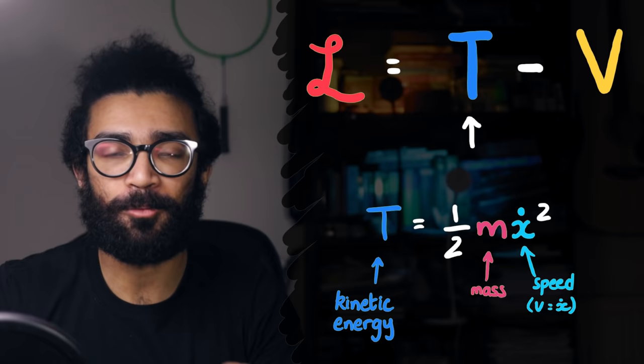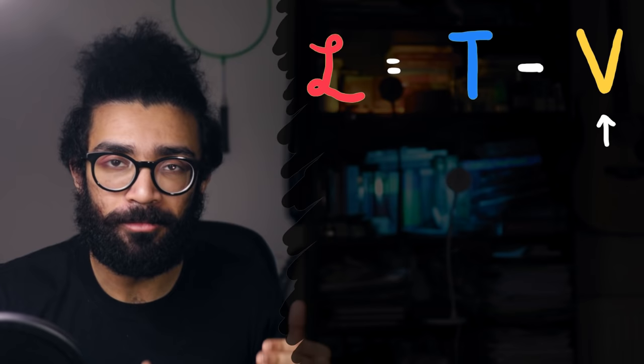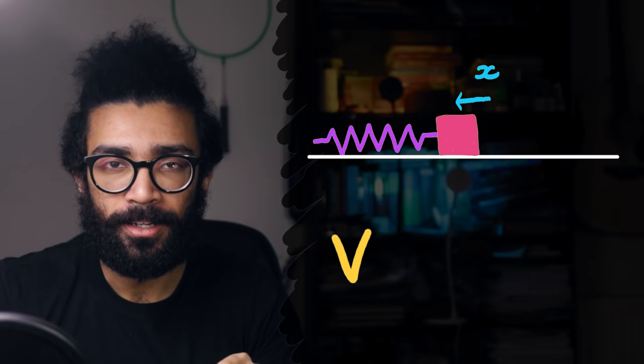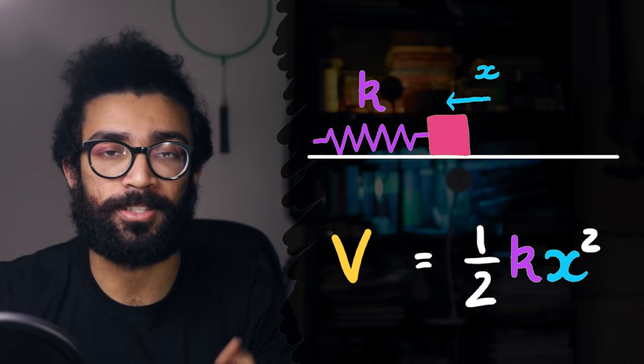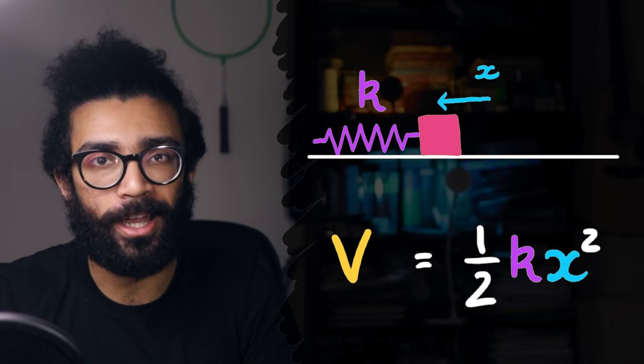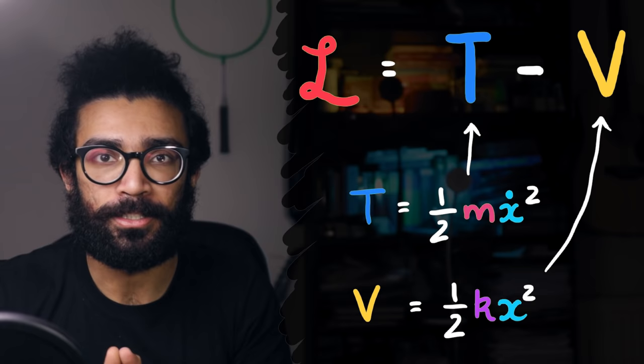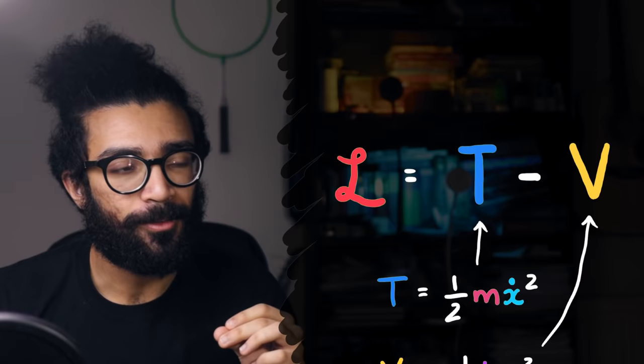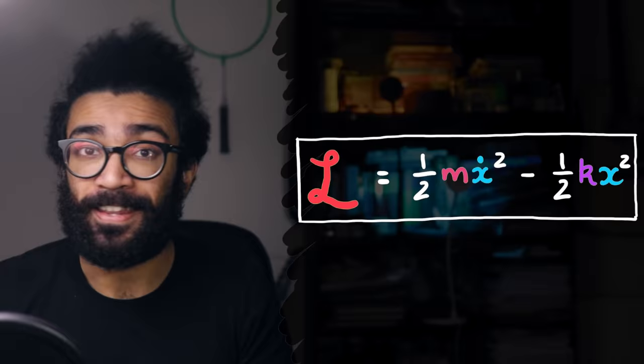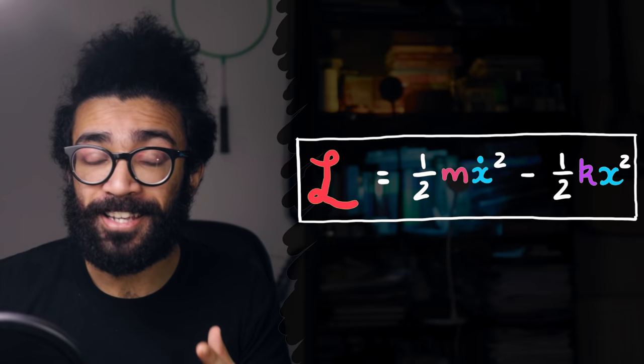Now what about the potential energy of our system? Well this is where we really need to think about the spring. Let's recall that the potential energy stored in a spring is equal to half k x squared, where k is known as the spring constant or stiffness of the spring, and x is either the compression or extension of the spring away from its natural position. And at this point we can combine our two expressions for the kinetic and potential energies, and stick them into our definition of the Lagrangian. L is equal to t minus v. The Lagrangian is equal to kinetic energy minus potential energy, which is equal to half m x dot squared minus half k x squared. And that's how we find the Lagrangian for this particular system.